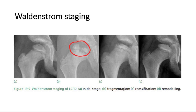The third stage is re-ossification, which begins around 12 months and can last until 18 months. During this time, there will be re-ossification of the nucleus, beginning peripherally and then progressing centrally as the necrotic bone is fully removed. Gradually, the epiphysis will regain its normal strength and density. The fourth stage is remodeling, which begins once the ossific nucleus is completely re-ossified and continues until skeletal maturity.